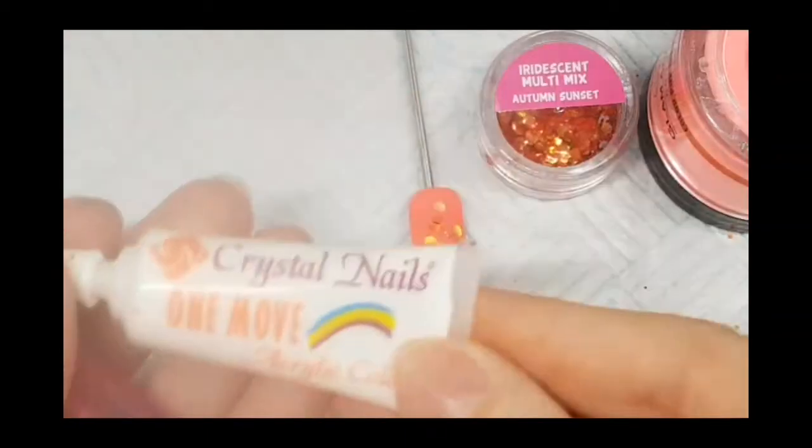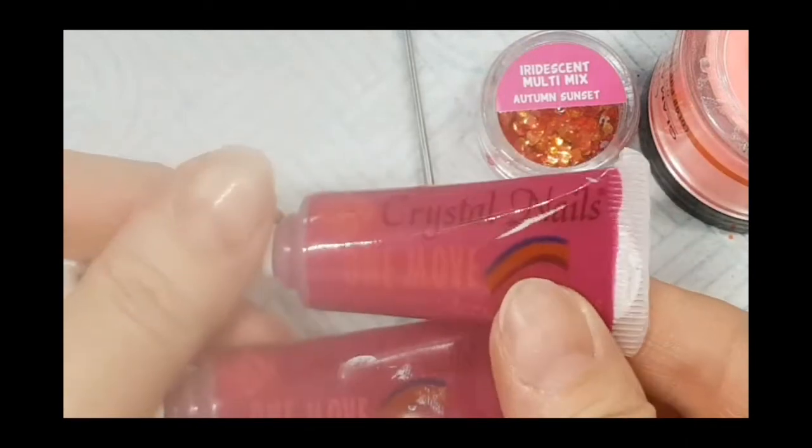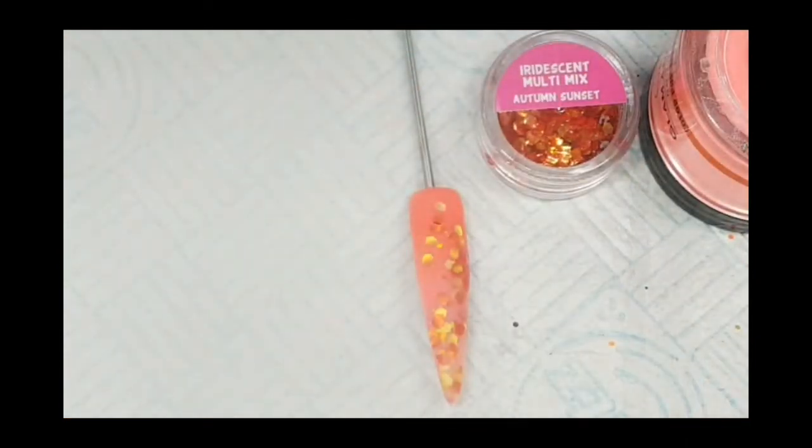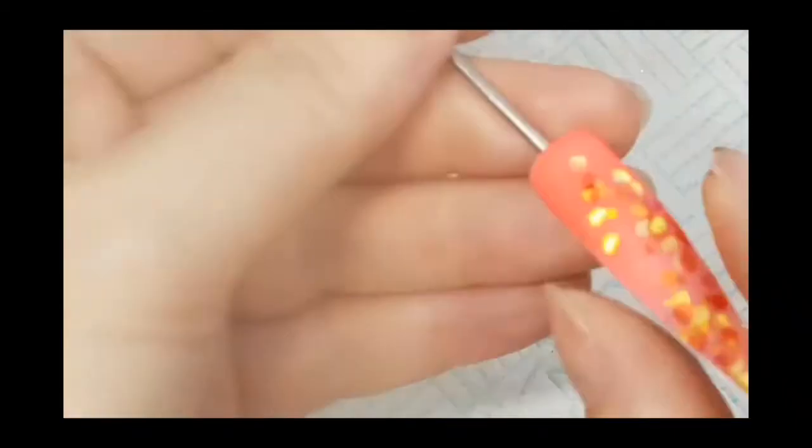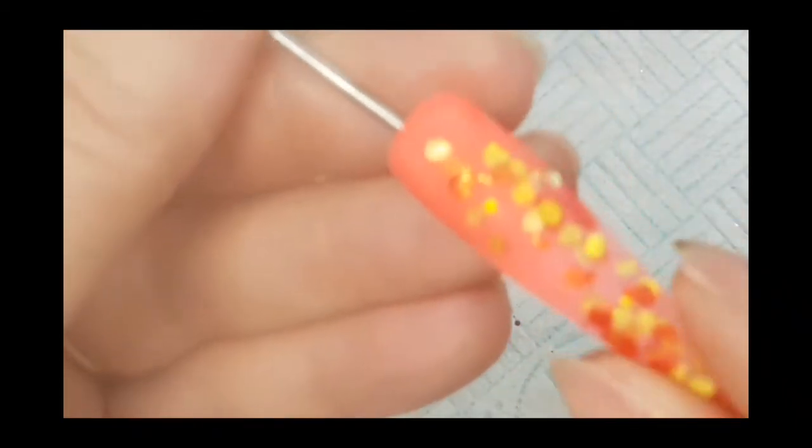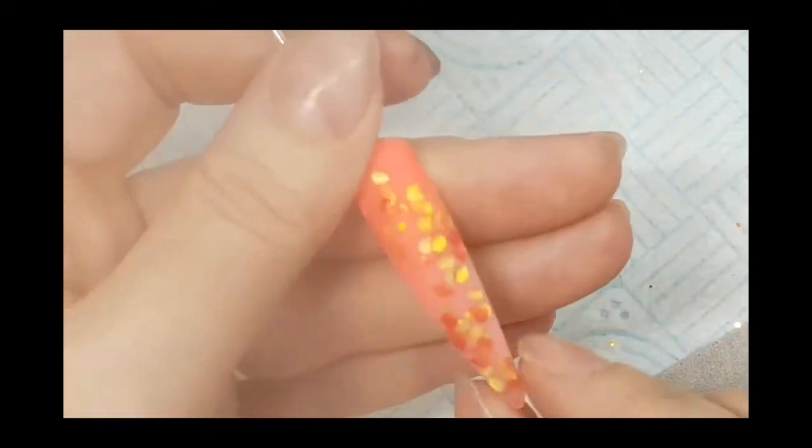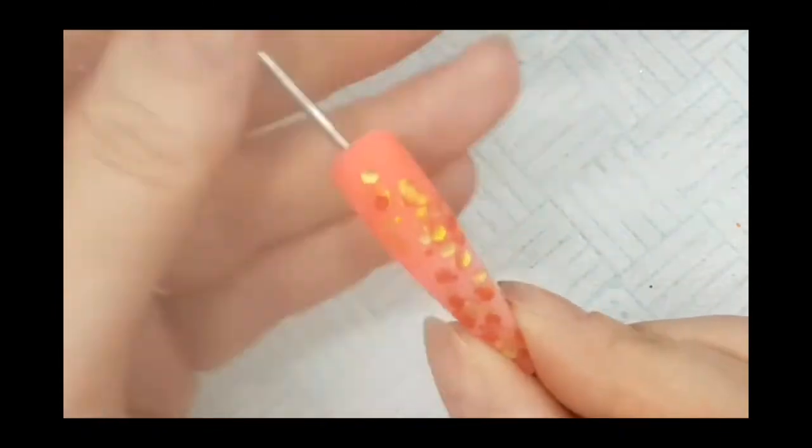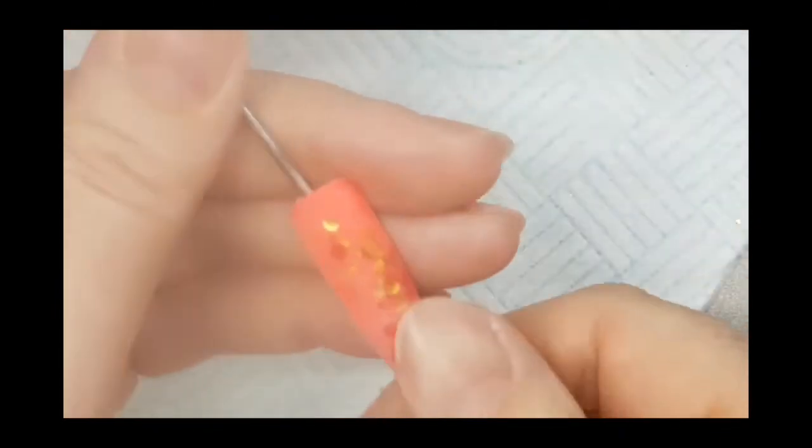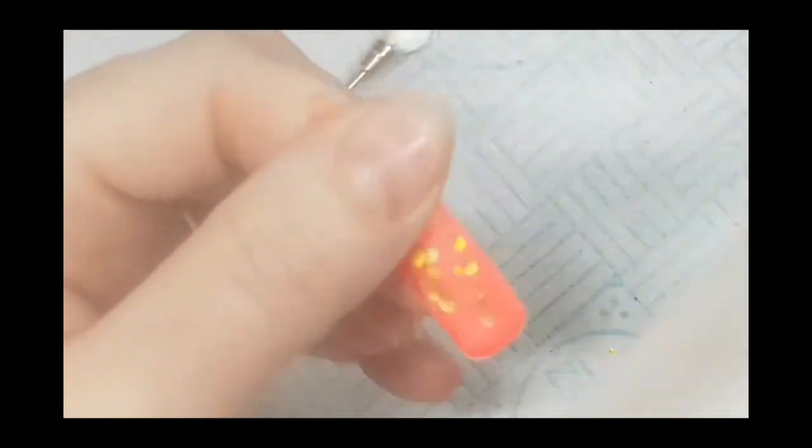Then I'll use my NSI 150 grit file to file over, and also a white block just to take out any scratches before I go ahead and put some design in with my One Move paints. All the products that I'm using today are available from The Nail Team at www.thenailteam.com. Patience is needed when you're just doing one tip.